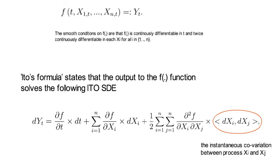Let's add some insights to that term. The instantaneous covariation between xi and xj is written as bracket dxi comma dxj bracket.